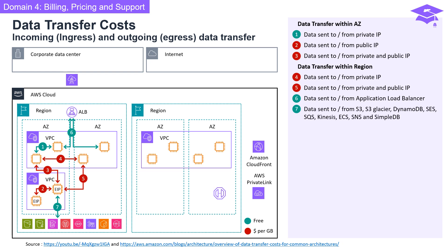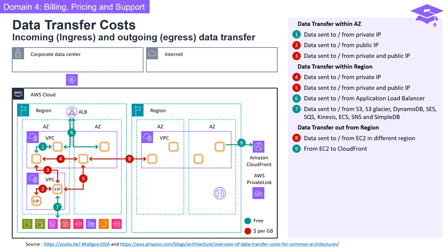There is no charge for data sent to or from S3, S3 Glacier, DynamoDB, SES, SQS, Kinesis, ECS, SNS, and SimpleDB. Data sent to or from EC2 in a different region is charged. Data sent from EC2 to CloudFront is free; however, you will be charged for data sent from CloudFront to EC2.